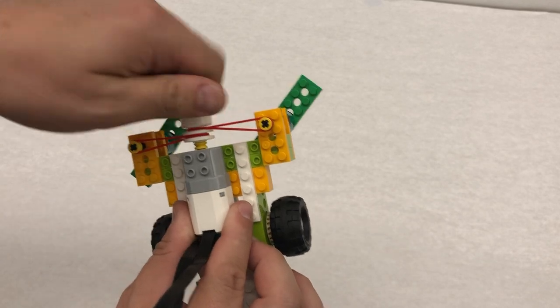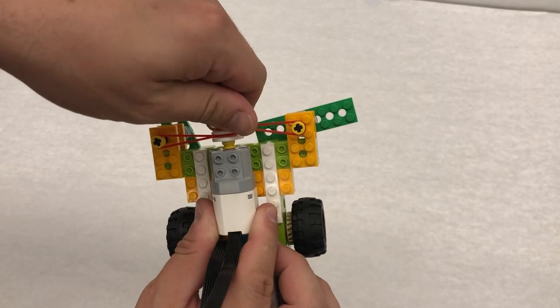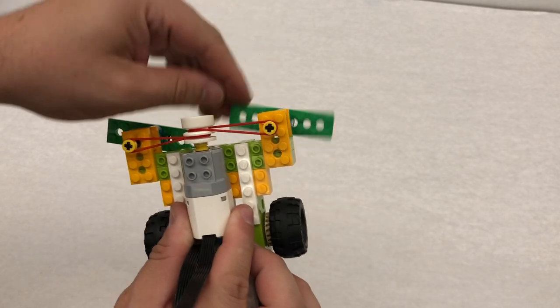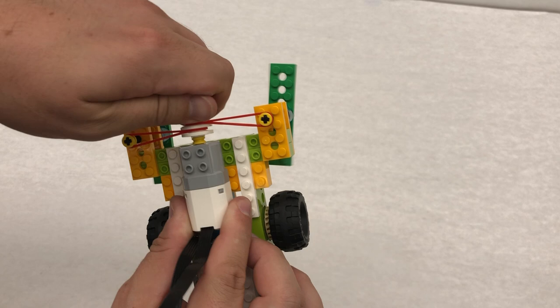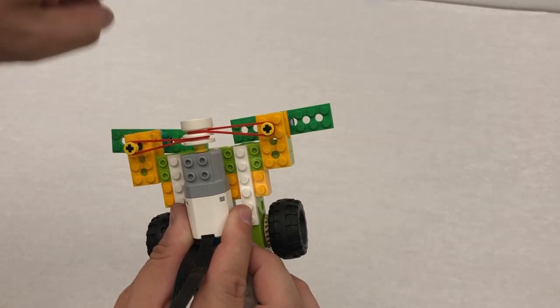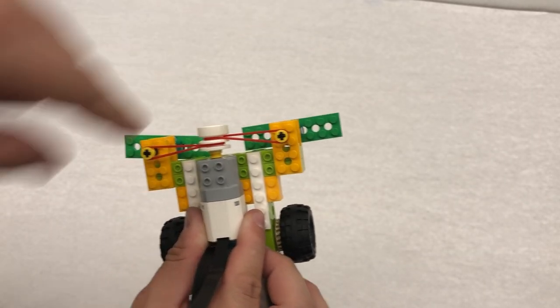And then as this turns you'll see that they're gonna twist. Now you'll notice that we can move these around because of the rubber bands. And we want it when this is twisting for them to do opposite things. So one's going clockwise the other one's going counterclockwise.